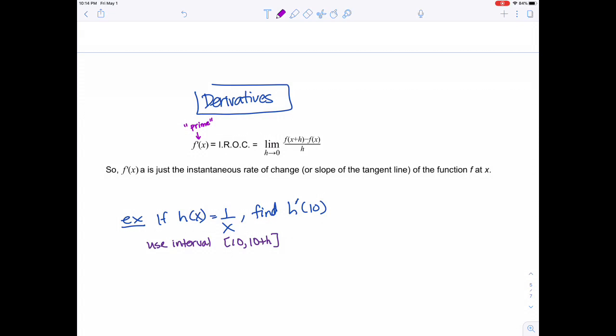f prime of x is the instantaneous rate of change over an interval from x to x plus h. If I draw a picture, here's my function with x and x plus h. I'm trying to find the slope of the tangent line at point x, where the change in the interval is zero. f prime of x is just the slope of the tangent line at point x. We're finding the slope of the tangent line, or the derivative, or the instantaneous rate of change - they're all the same thing.